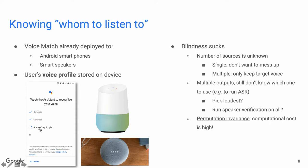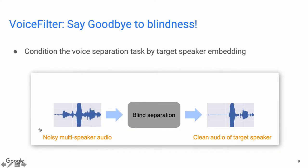First, in blind separation, you don't know how many sources there are at runtime. You may do well when the input has multiple sources, but you also don't want to mess up when the input is already a single source. Second, blind separation usually has multiple outputs and you still need to pick the one you need — for example, to run ASR. Finally, permutation invariant training is usually very expensive. So with the proposed VoiceFilter system, we can say goodbye to blindness.